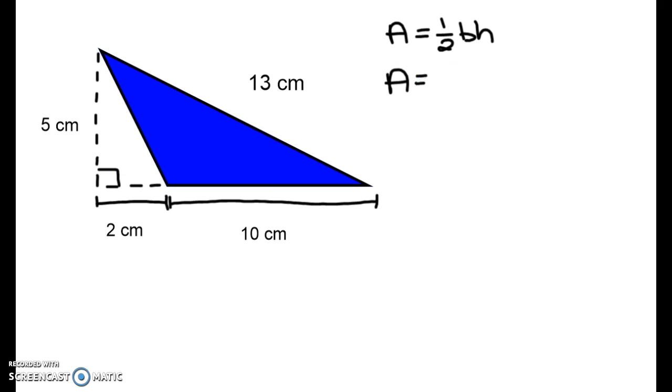So I'm going to substitute in my values, one-half times the base is 10 and the height is 5. So area equals half of 10 is 5 and 5 times 5 is 25. So the area of this triangle is 25 square centimeters.